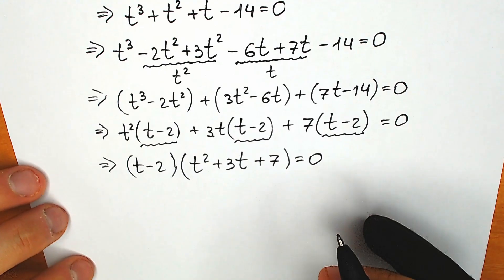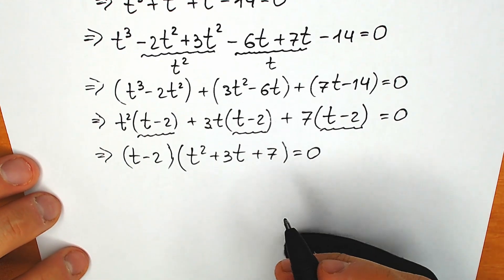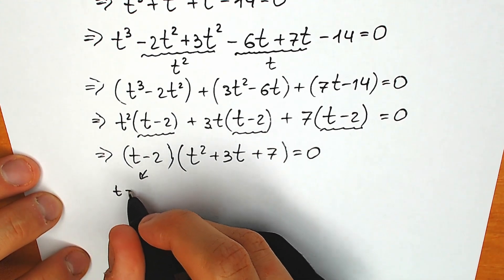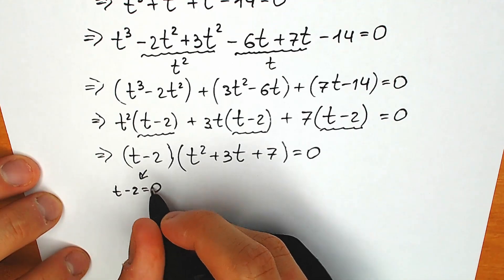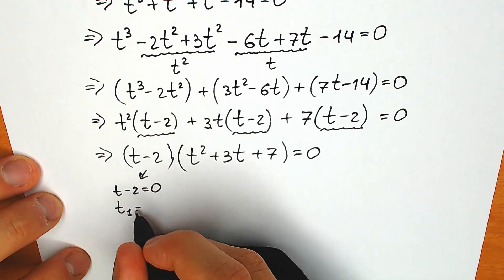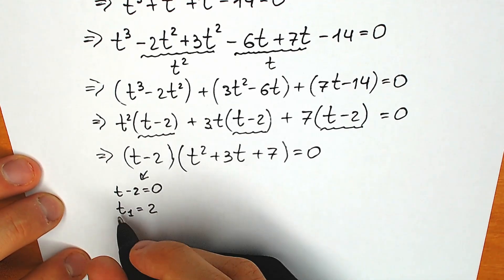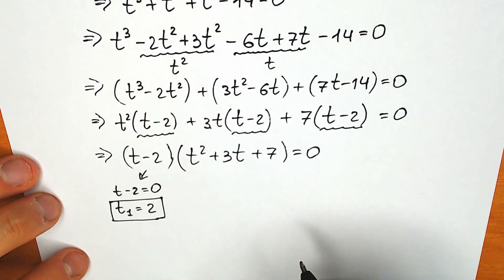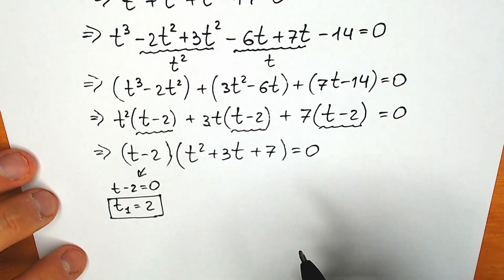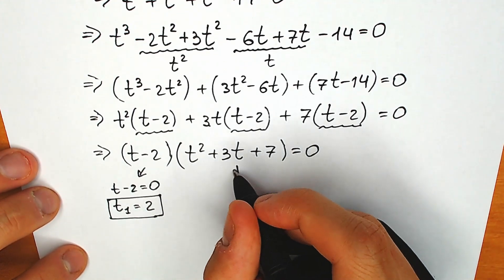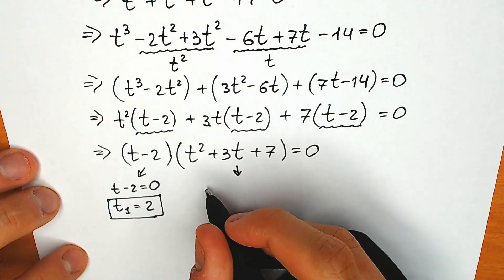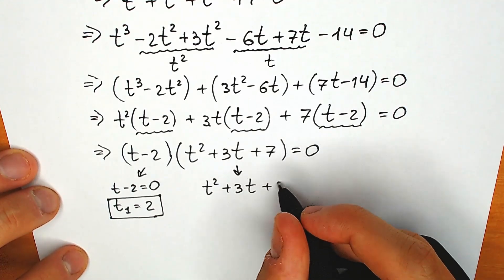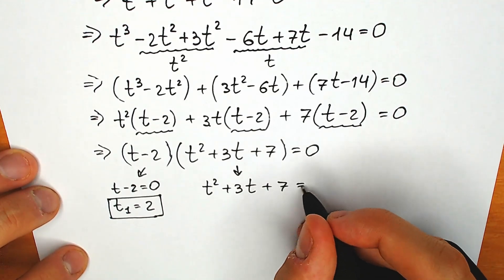A product of two factors equals zero when the first factor equals zero: t minus 2 equals zero, giving t₁ equals 2. We'll find x shortly. But first, let's solve the second quadratic equation: t squared plus 3t plus 7 equals zero.